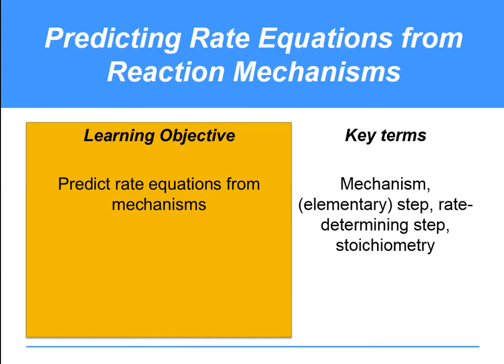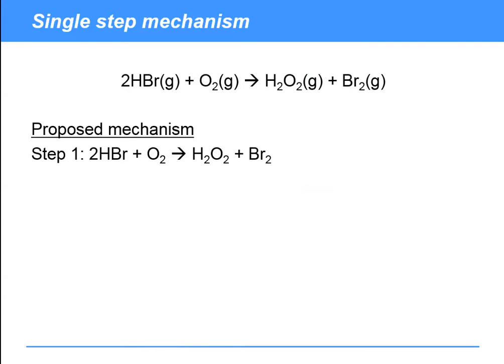Welcome to this video on predicting rate equations from reaction mechanisms. Imagine we have a reaction mechanism taking place. This is the overall equation for the reaction and this is a proposed mechanism. What would the rate equation, or rate law, be that arises from this particular mechanism?